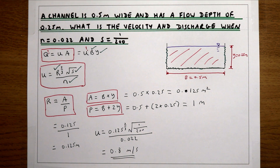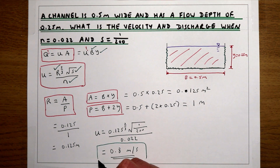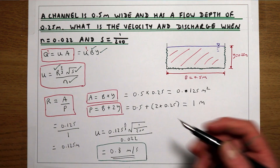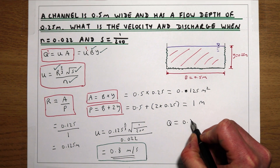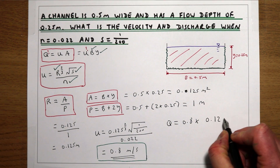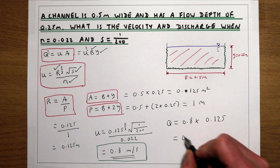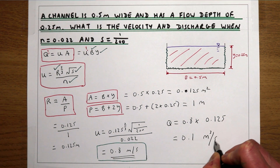The velocity of water moving through the channel is 0.8 metres per second. Now we can work out the flow. The flow Q is velocity times the cross-sectional area, so 0.8 times 0.125 m², which gives us a flow rate of 0.1 metres cubed per second.